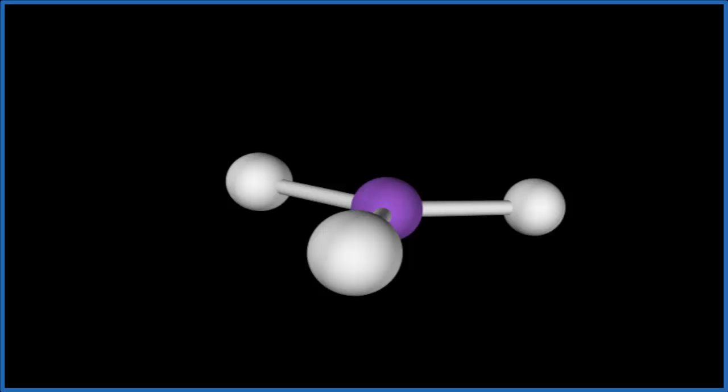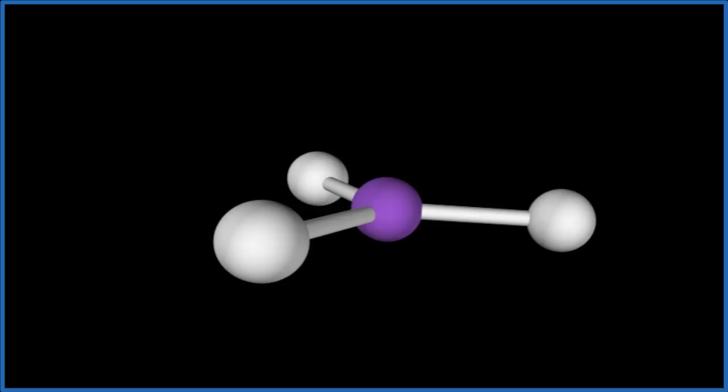Note that boron's kind of special. It doesn't need an octet. It only needs six valence electrons, these six bonds. Each bond has two valence electrons. So it is an exception to the octet rule. Let's go back to our Lewis structure.